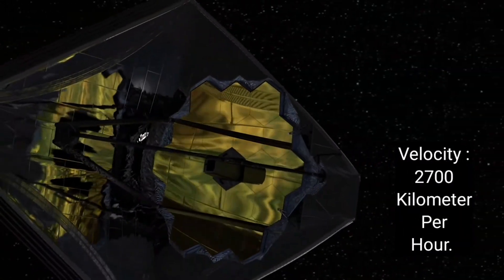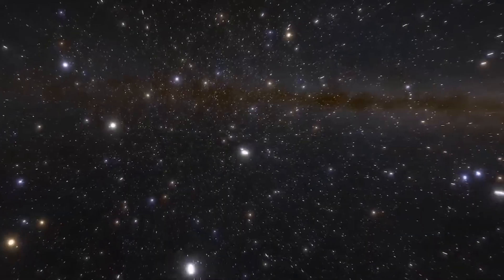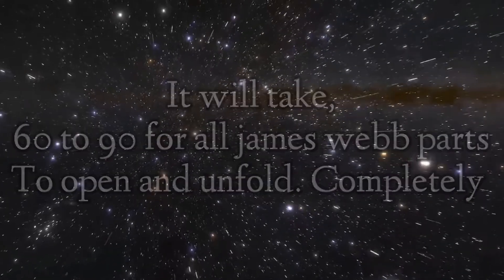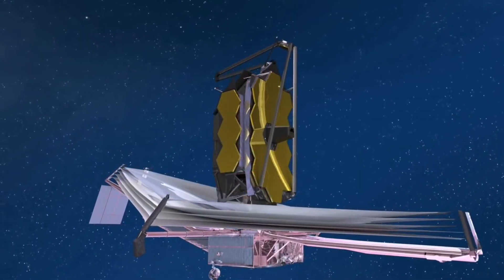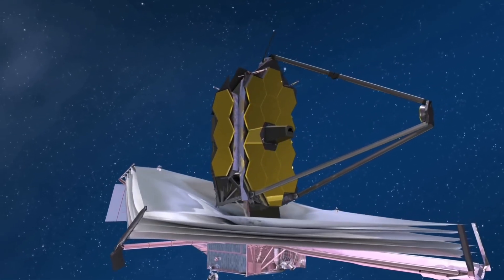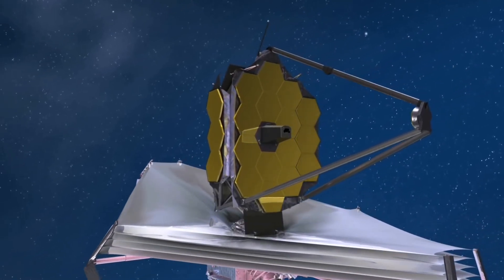In this moment, while I'm speaking to you, James Webb Telescope is moving 2700 kilometers per hour towards L2. It will take approximately 60 to 90 days for all the parts of the James Webb to open. I did not make a video about James Webb Telescope in its first day of launch, and I made it now because there was a risk of failure and some other problems when opening the telescope parts. But now, James Webb has gone through all the difficult stages to unlock all the parts of the telescope, especially the two sides of the mirror and the sunshield.